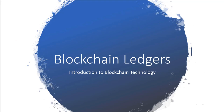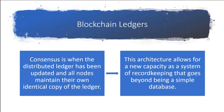Blockchain ledgers — let's discuss what exactly a blockchain ledger is and how they work. We have to understand that in a blockchain we have consensus. Consensus is where the ledger — distributed between all the nodes on the network — will have each node maintaining their own copy of the ledger.